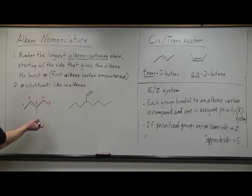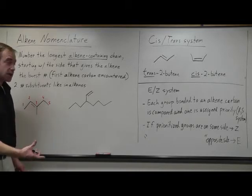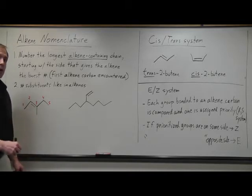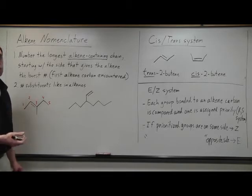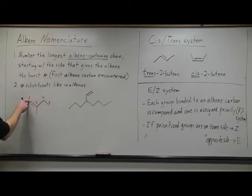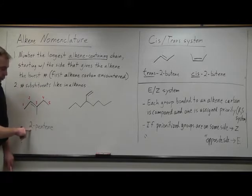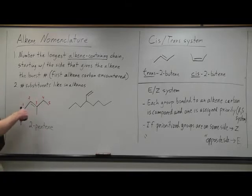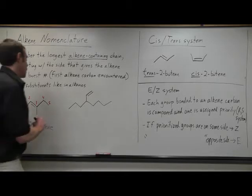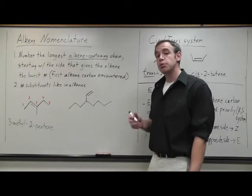So now we can just name the alkene. This is a five-carbon chain, which would normally be a pentane. Since it's an alkene, we drop the A and we replace it with an E, so this would be a pentene. And so this specifically is 2-pentene. That two describes the location of the alkene. Since we've got a methyl substituent on carbon number three, we have 3-methyl-2-pentene.